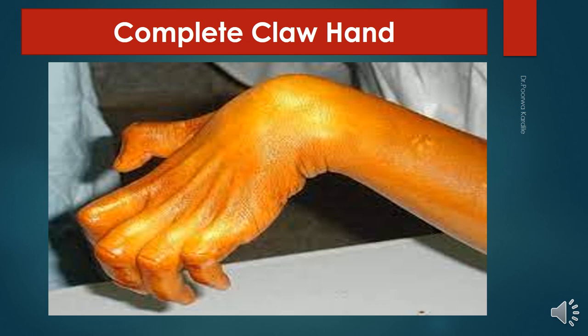In complete claw hand both median and ulnar nerves are affected. In incomplete claw hand where only the ulnar nerve is affected, there is hyperextension at the metacarpophalangeal joint and flexion at the interphalangeal joint involving only the ring finger and little finger. Sensory loss is confined to the medial one-third of the palm and medial one-and-a-half fingers. Vasomotor and trophic changes are also seen.